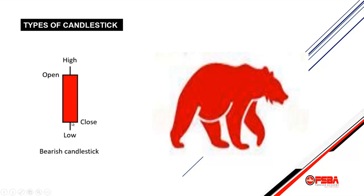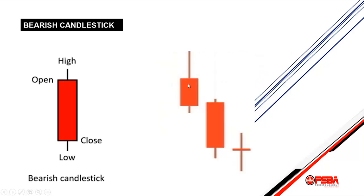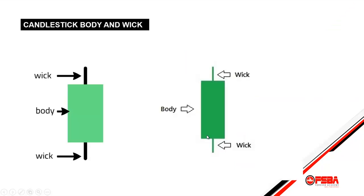The candlestick opens here, went up to the high, made a move down, and closes here. This is the opening price and this is the closing price. The next day it opens, goes up, makes a move down and closes. All these candlesticks are bearish candlesticks.